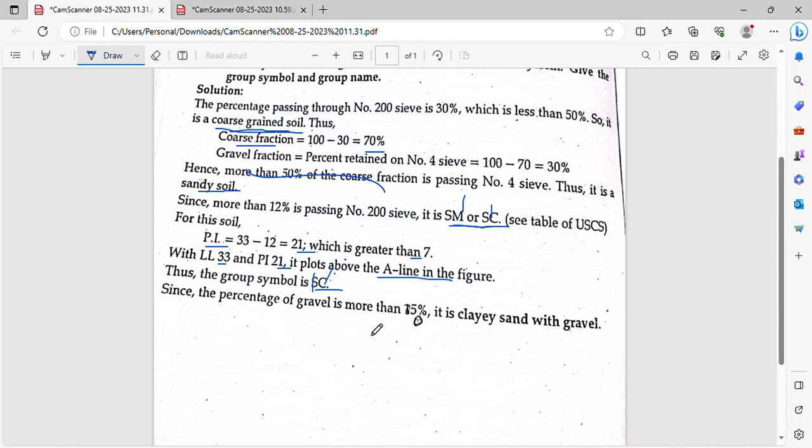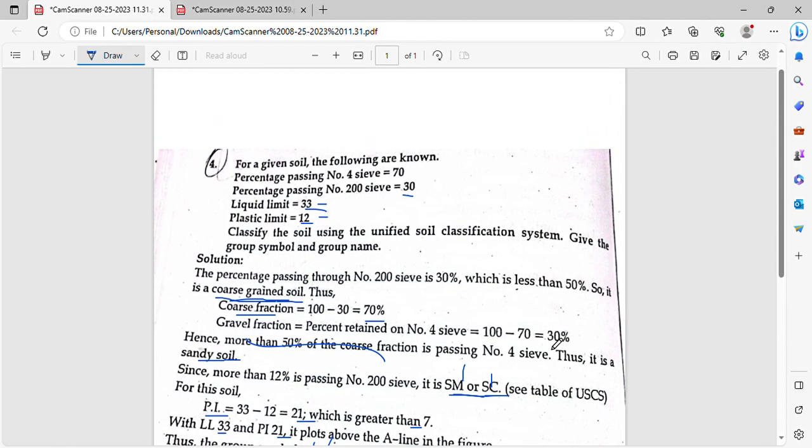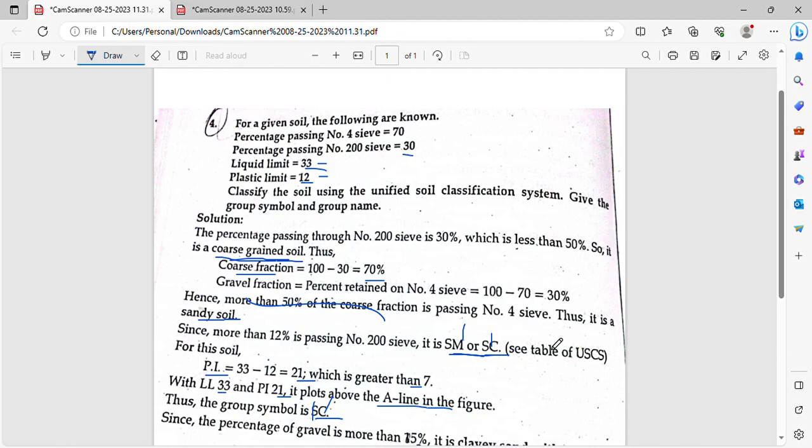Now, the percentage of gravel is more than 15%. The percentage of gravel is more than 15%, so it is clayey sand mixed with gravel.